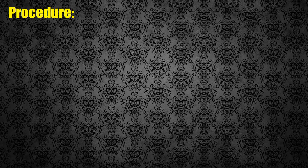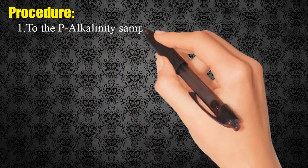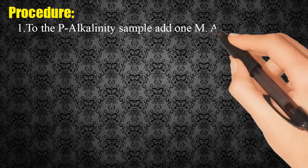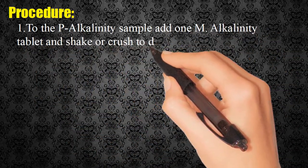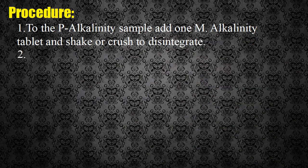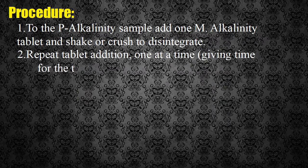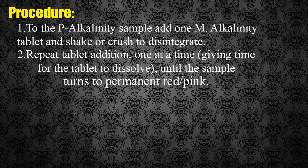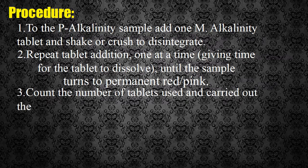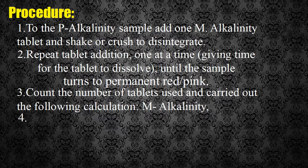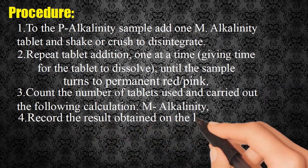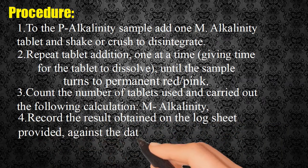M-alkalinity procedure: (1) To the P-alkalinity sample, add one M-alkalinity tablet and shake or crush to disintegrate. (2) Repeat tablet addition one at a time, giving time for each tablet to dissolve until the sample turns permanently red-pink. (3) Count the number of tablets used and carry out the calculation for M-alkalinity. (4) Record the result obtained on the log sheet against the date on which the test was taken.